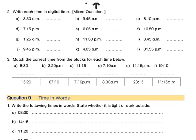Let's continue on to question 2. These are now mixed questions. Write each time in digital time — all of these times are in analog time, so we must transform them into digital or 24-hour time. Let's look at these together. 3:30 AM — this is very early morning, you are not awake yet. Only three hours of the day have passed, so it's 03:30.